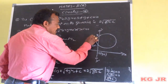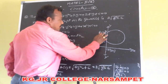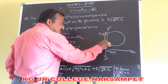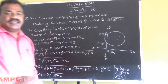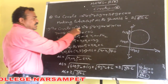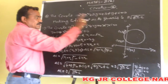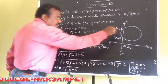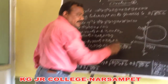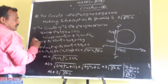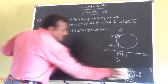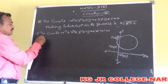The circle equation is x square plus y square plus 2gx plus 2fy plus c. This circle cuts the y-axis. At any point on the y-axis, the x-coordinate is equal to 0. So, putting x equal to 0 in this equation, it becomes y square plus 2fy plus c is equal to 0.